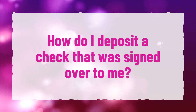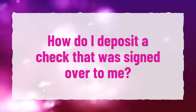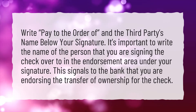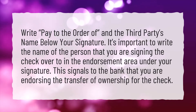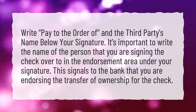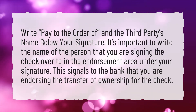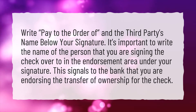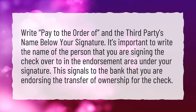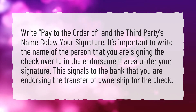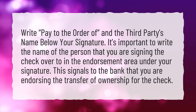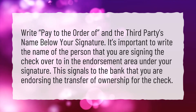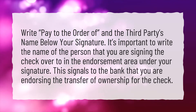How do I deposit a check that was signed over to me? Write 'pay to the order of' and the third party's name below your signature. It's important to write the name of the person that you are signing the check over to in the endorsement area under your signature. This signals to the bank that you are endorsing the transfer of ownership for the check.